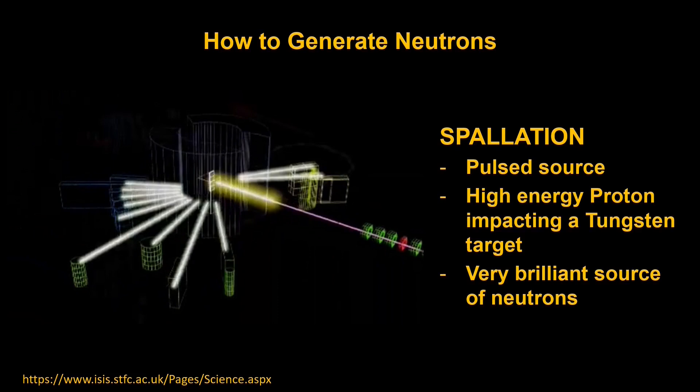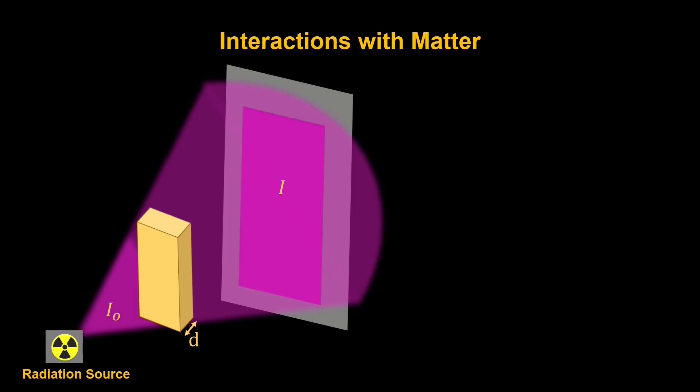Now, if we took the example of using these neutrons for imaging, the setup would be quite like what we covered in the last lecture with X-ray computed tomography. You have your radiation source, your sample, and your detector.